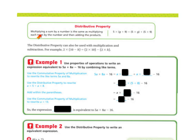The distributive property states that multiplying a sum by a number is the same as multiplying each term by that number and then adding the products. For example, 5 times (g plus 9) is the same as 5 times g plus 5 times 9.